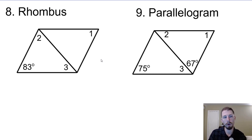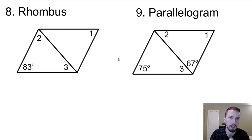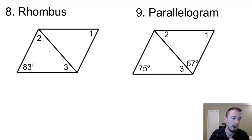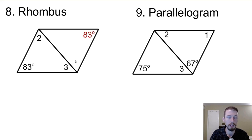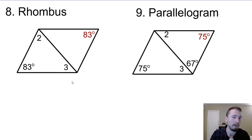Going back to review problems 8 and 9: number 8 is a rhombus and number 9 is a parallelogram. They look exactly the same but we solve them two different ways. A rhombus is easy because there are two lines of symmetry and everything is the same. Angles two and three are going to be the same. Angle one — the opposite angle — is the same as 83 degrees, so you can fill that in right off the bat.